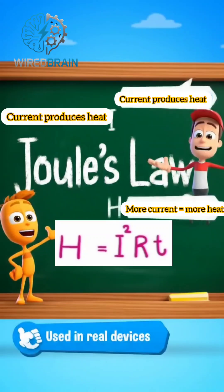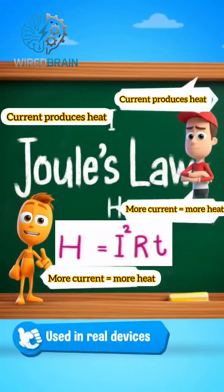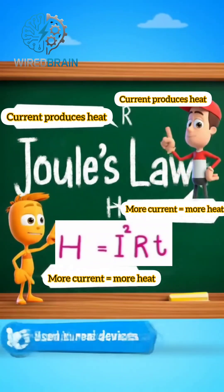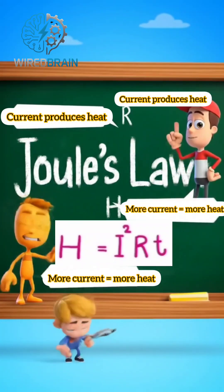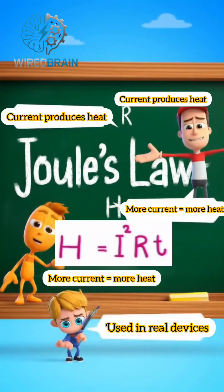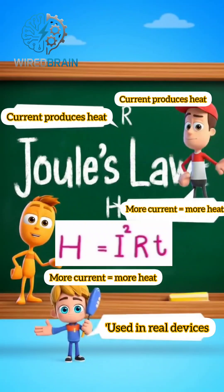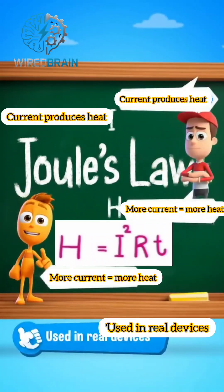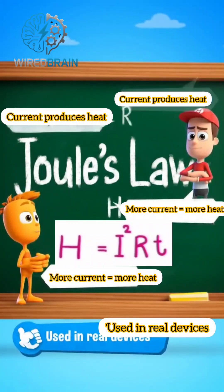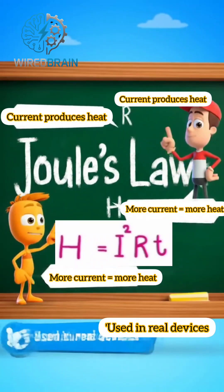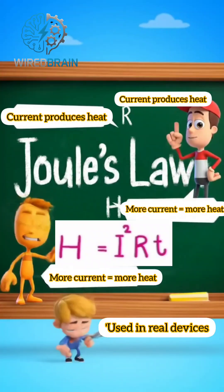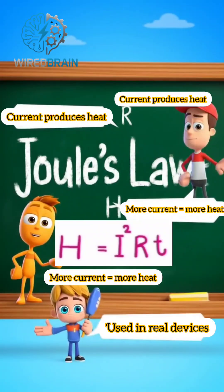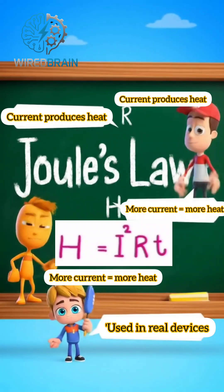Let's review. Electric current produces heat, described by H = I²RT. More current or resistance equals more heat. This is useful in heaters, irons, and safety devices. Now you know how electricity can make things hot.